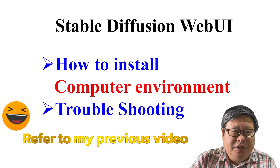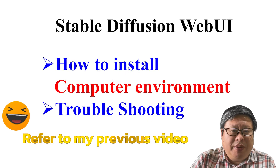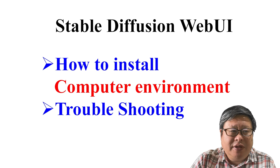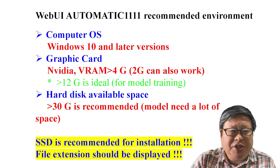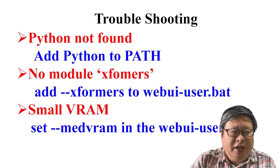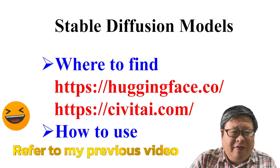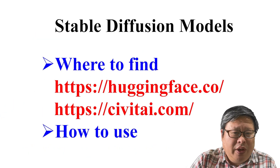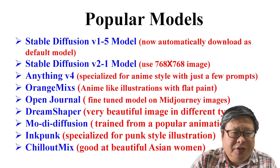First, you need to install Stable Diffusion WebUI Automatic 1111 on your computer. You can refer to my previous video on how to do this — it is easy to follow, even if you have zero knowledge about Stable Diffusion. Additionally, I have provided instructions on where to find a model that fits your needs, how to download it, and how to use it.